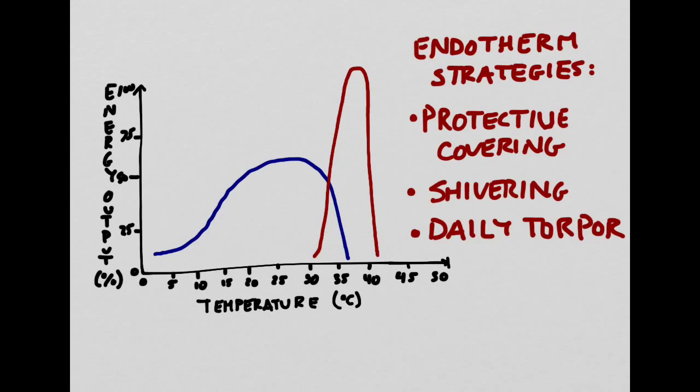One final strategy that some endotherms will use is something called daily torpor. This allows them to use minimal amounts of glucose and still maintain a decent body temperature for long periods of time.